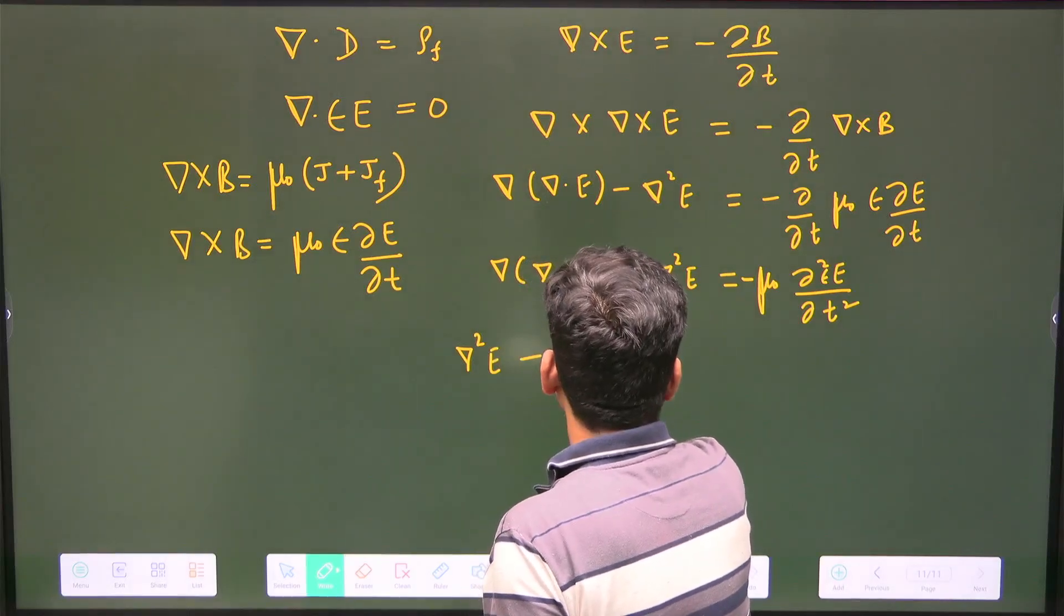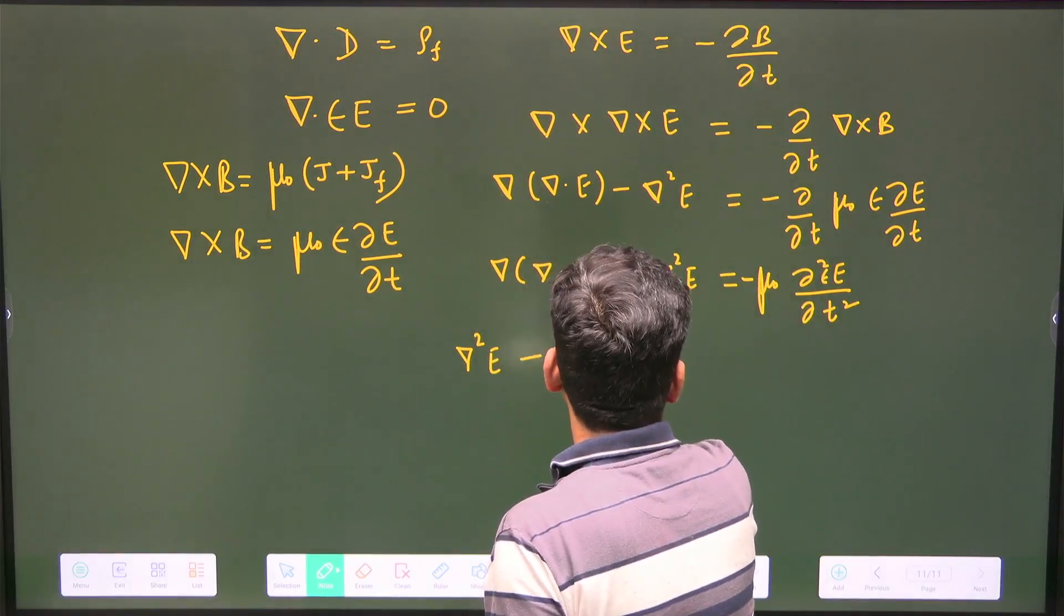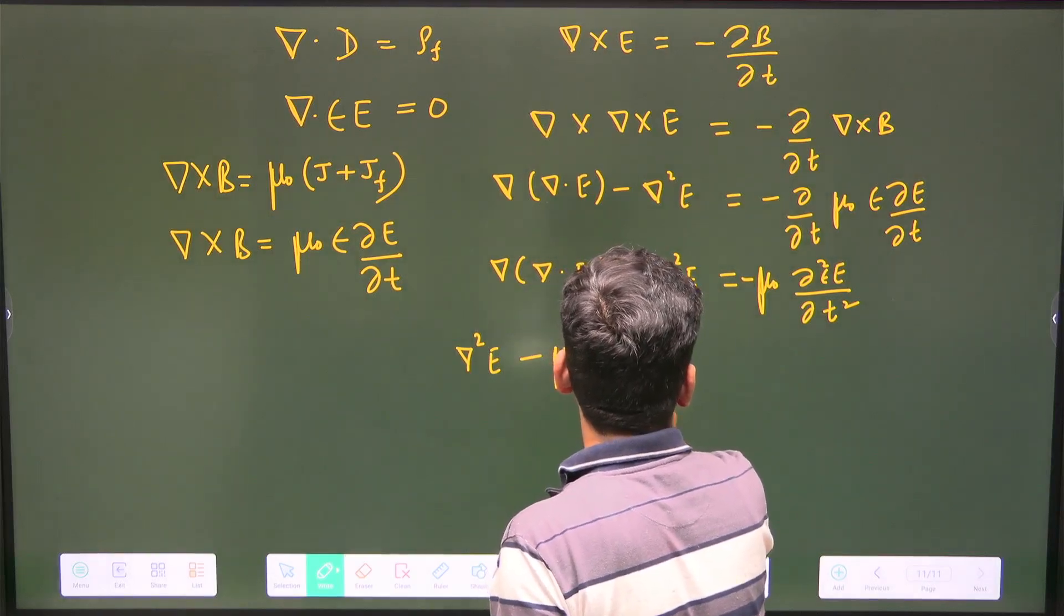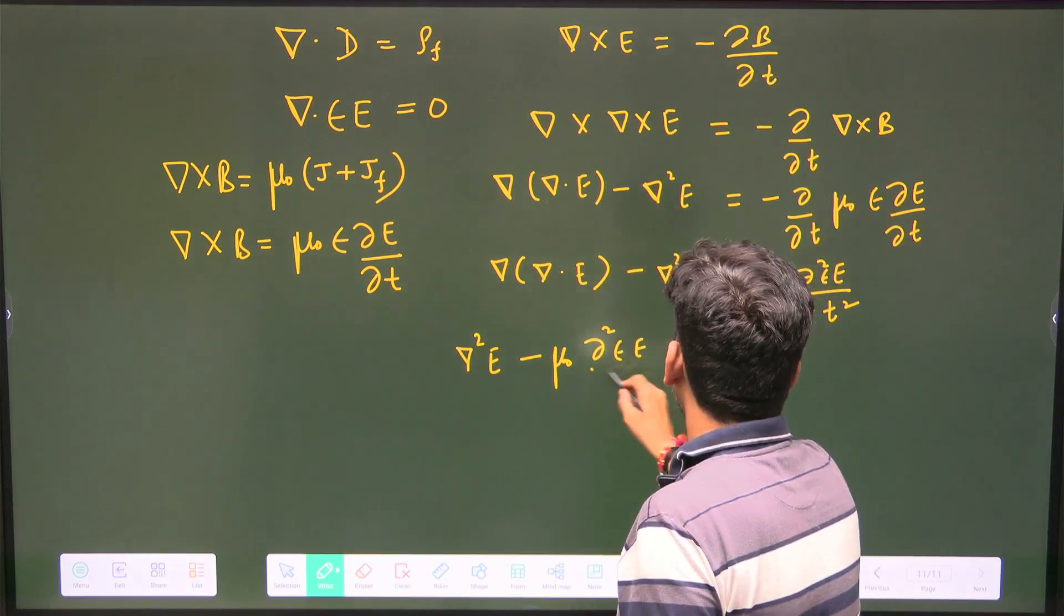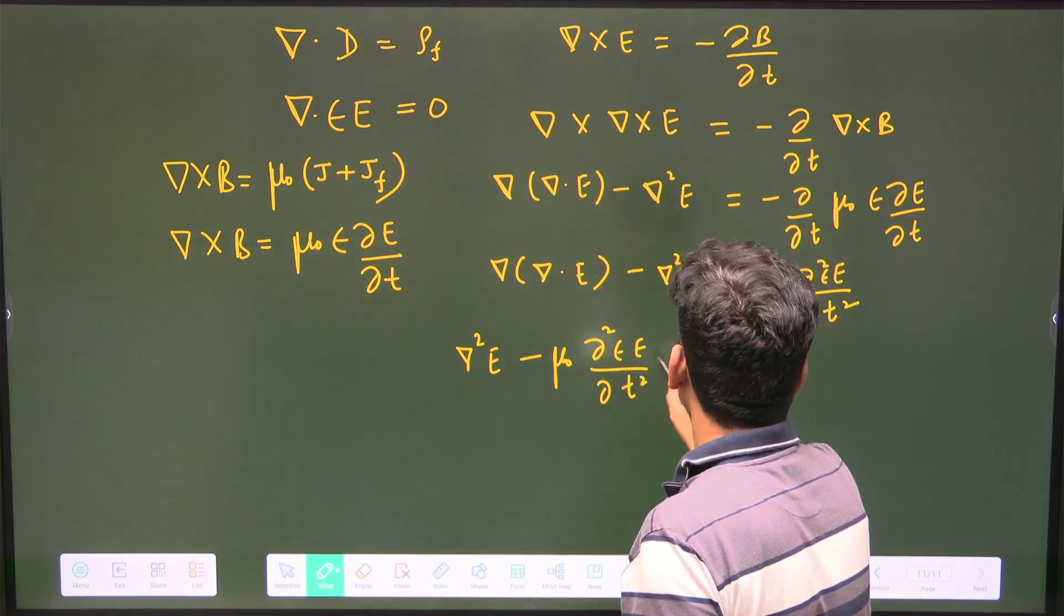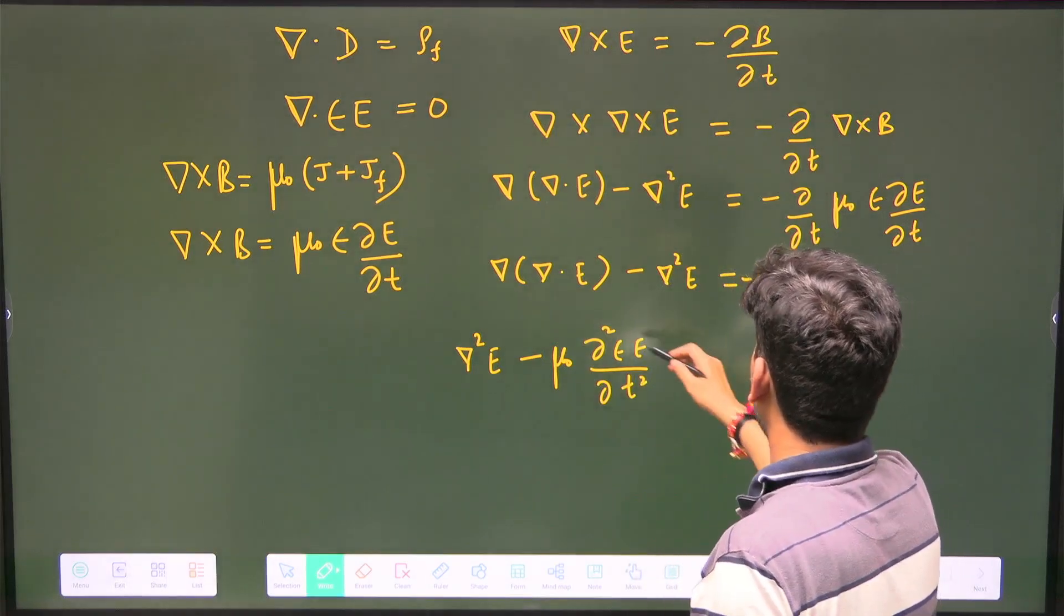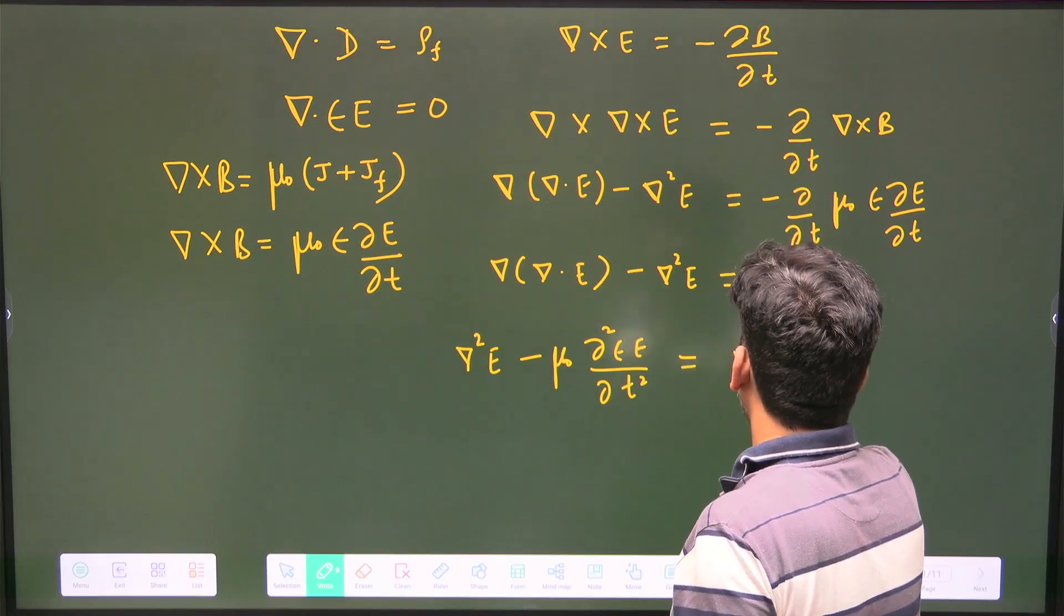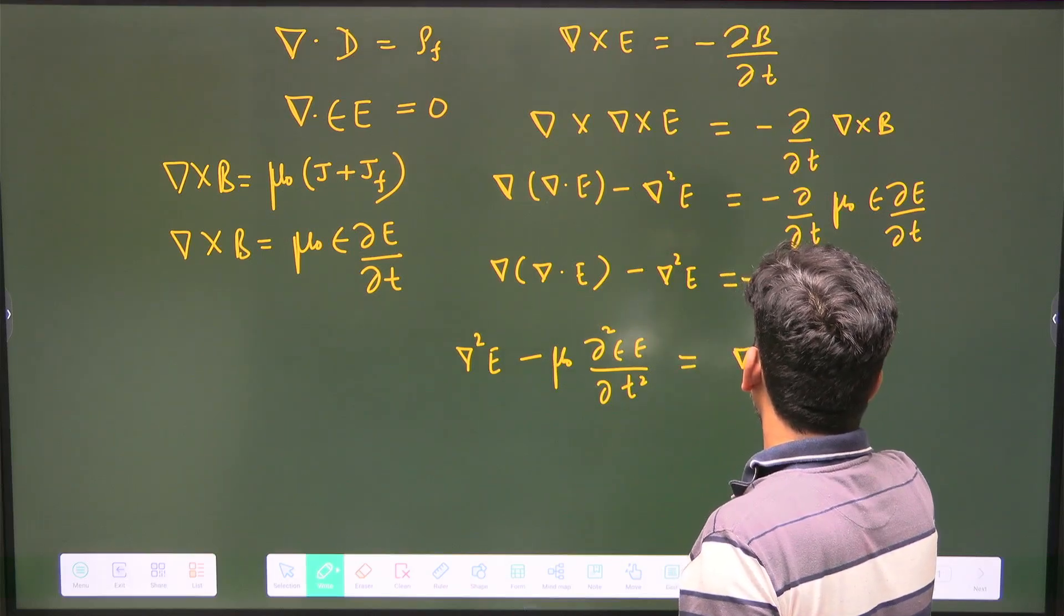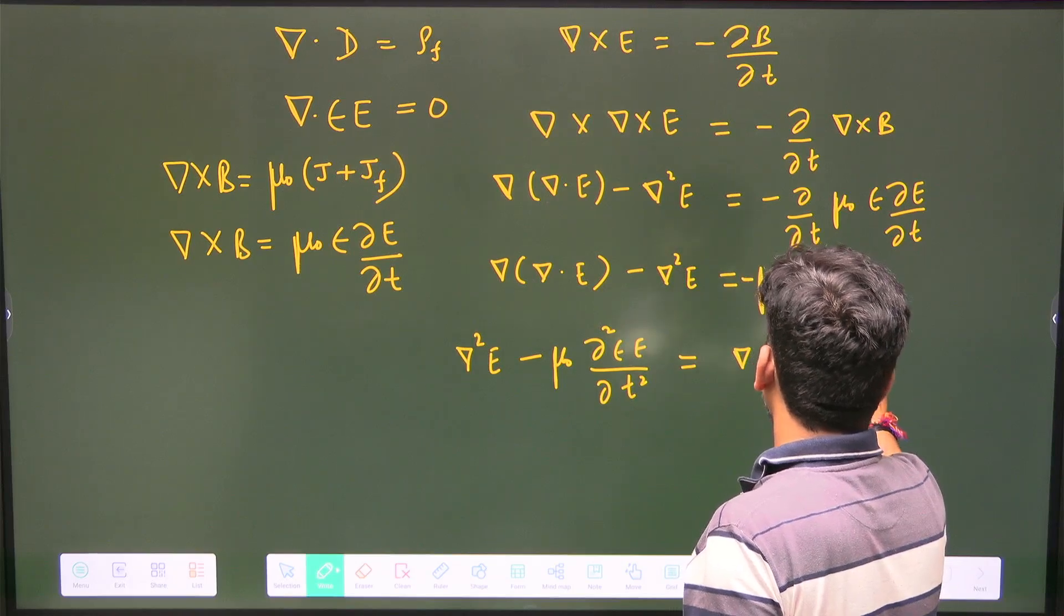This is what we get. Now del square E, taking it to the other side, will be minus μ₀ del²(εE) by del t², and this is equal to grad of del dot E.